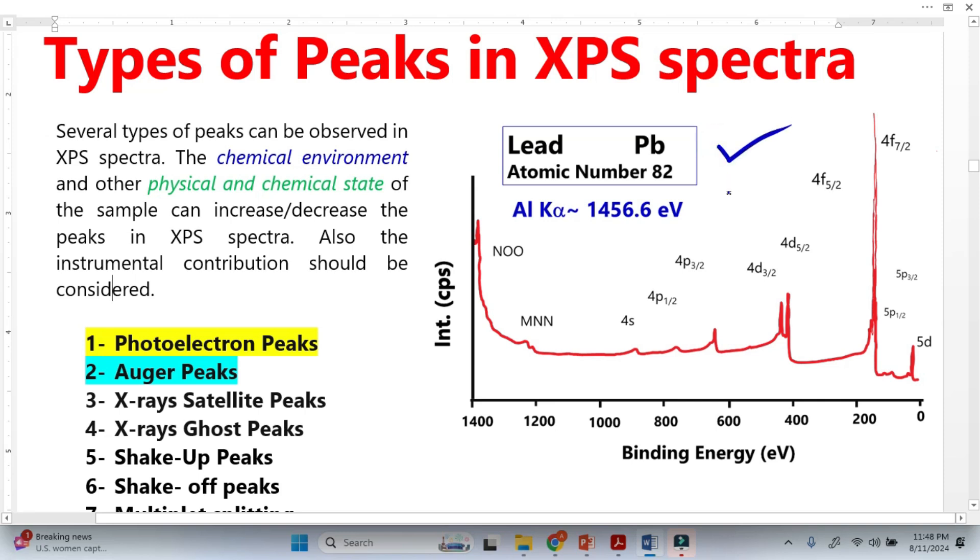We know that XPS spectra are composed of a large number of peaks. The number of peaks basically depends on the chemical environment. The second important parameter is the physical and chemical state of the sample, and the last one is the instrumental contributions. So the number of peaks basically depends on these three parameters.